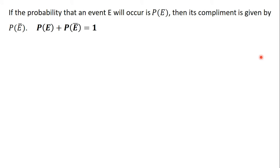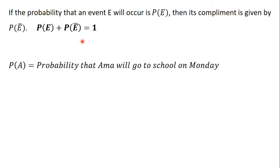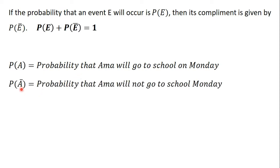In the videos on events and types of events, we learned that if the probability that an event E will occur is P(E), then its complement is given by P(E complement), and P(E) plus P(E complement) will give us 1. For example, if P(E) is the probability that Amma will go to school on Monday, then P(E complement) gives us the probability that Amma will not go to school on Monday, and together they sum to 1.